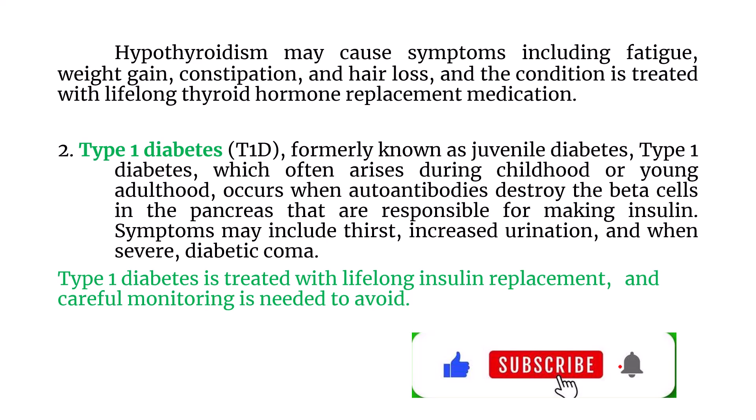Next is type 1 diabetes, also called type 1 diabetes mellitus or juvenile diabetes. It often arises during childhood and young adulthood. It occurs when autoantibodies destroy the beta cells in the pancreas, which are responsible for making insulin. Symptoms may include thirst and increased urination, and when severe it can lead to diabetic coma. Type 1 diabetes is treated with lifelong insulin replacement injections and careful monitoring to avoid severe fluctuation of blood sugar.